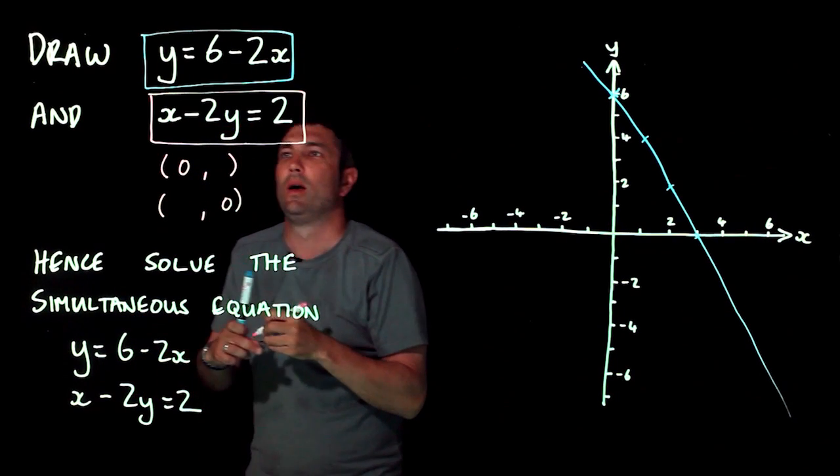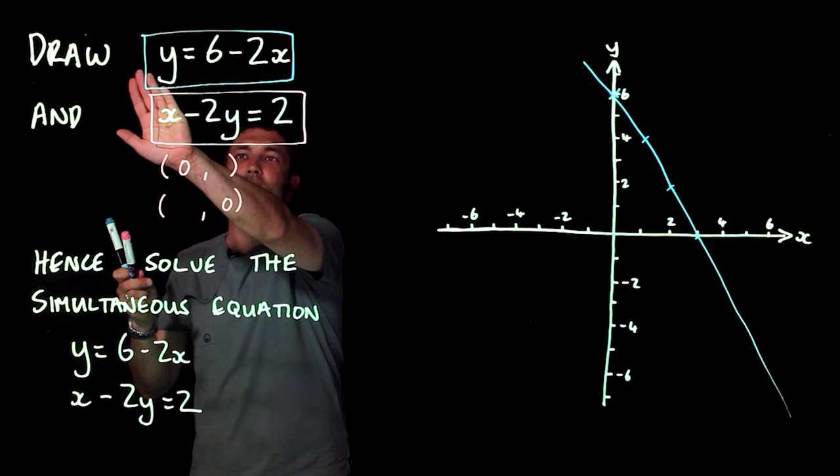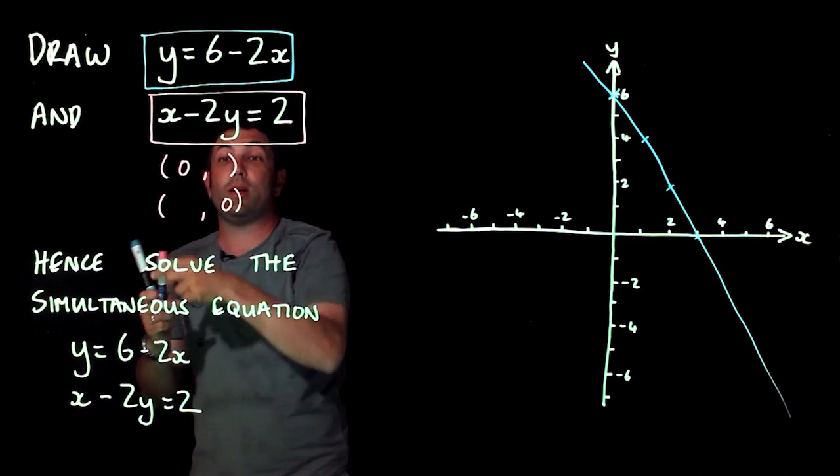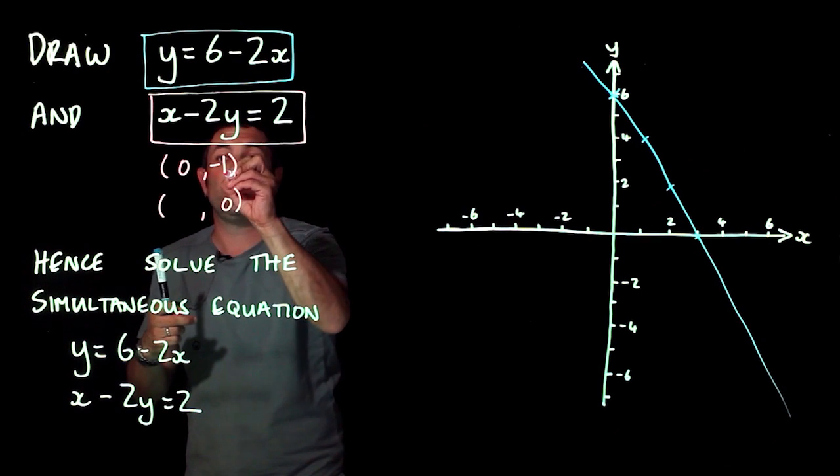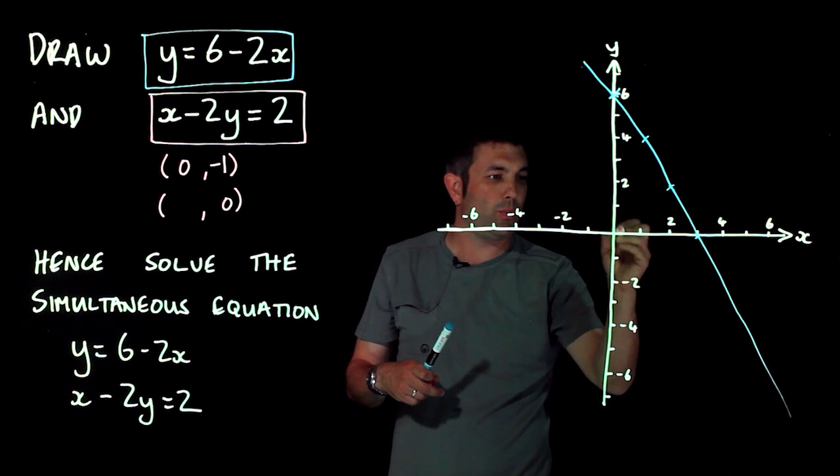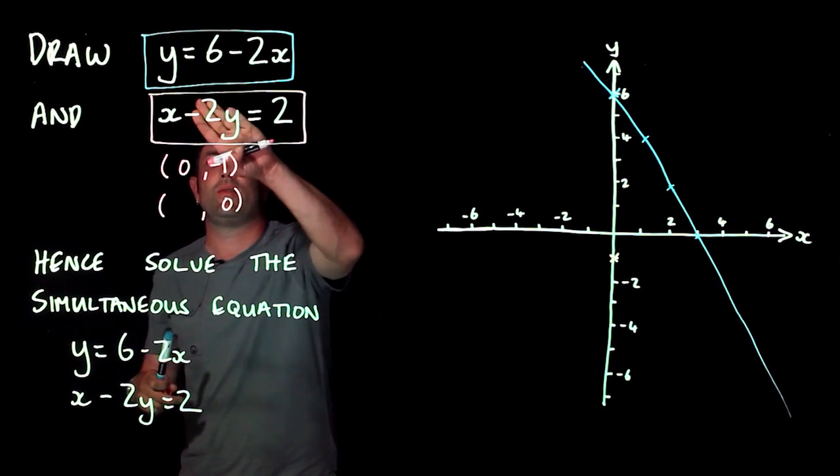We find the naught something by covering this bit up. So I've covered the x up and minus two y's makes two, so therefore y is negative one. And I'm going to plot that point straight away. So naught negative one, where are we? There we go. So that's that point there.